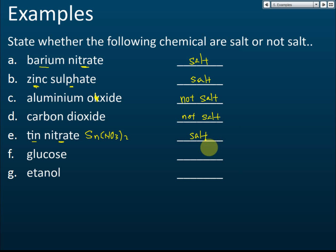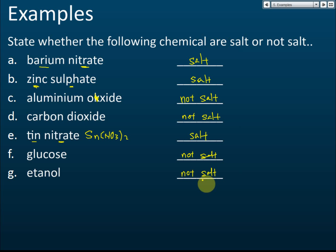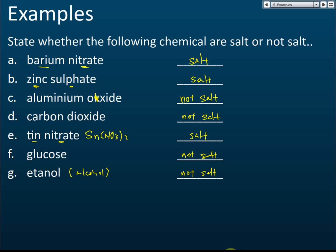Glucose — it is not a salt because it is a covalent compound. Ethanol is also not a salt — ethanol is an alcohol and a covalent compound. So these are the examples of substances that are salts and those that are not.